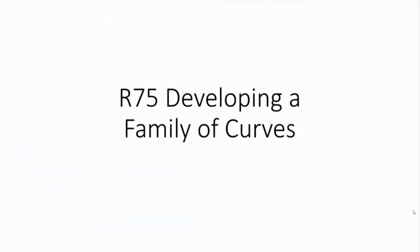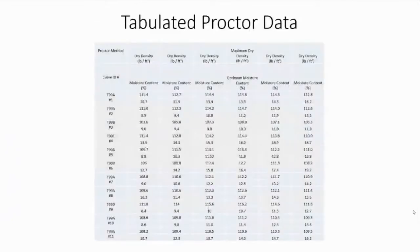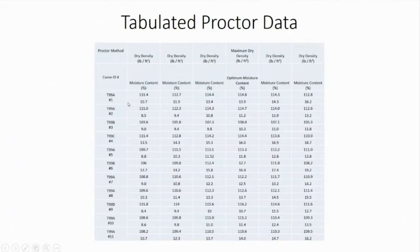This is AASHTO R75: developing a family of curves. We are presented with tabulated proctor data. In the far left column we see individual proctor methods identified with curve ID numbers, and to the right we have individual moisture and density points. All of these moisture-density points define individual curves.